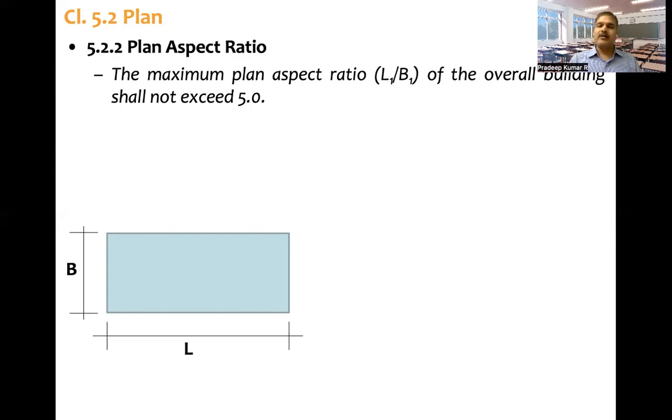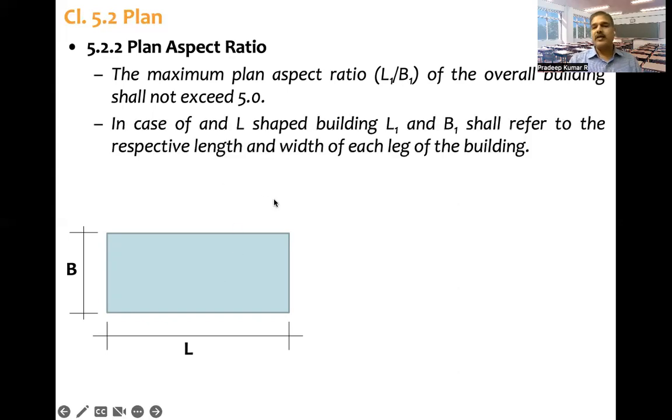If aspect ratio is very high, the displacement demand in different lateral load resisting elements will be different, and the force which is fed to these elements also will be different. Code is recommending that the aspect ratio of floor should be less than 5.